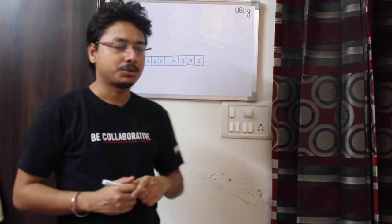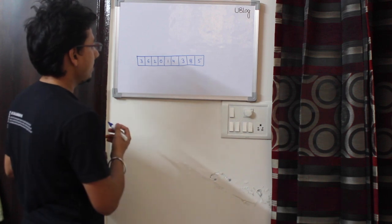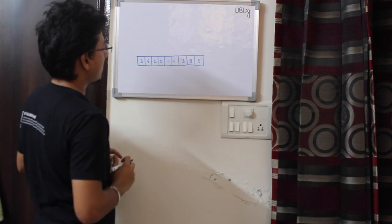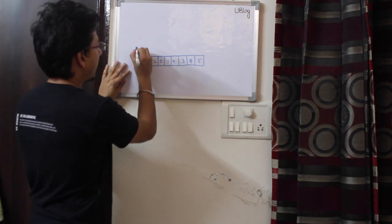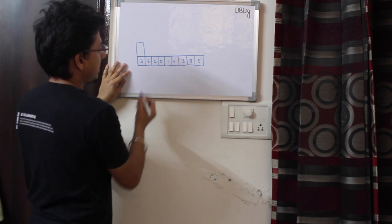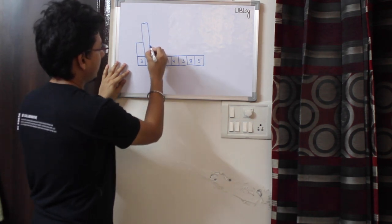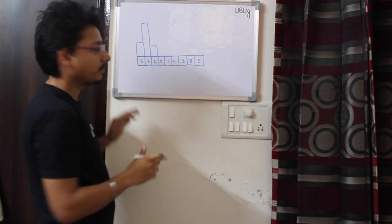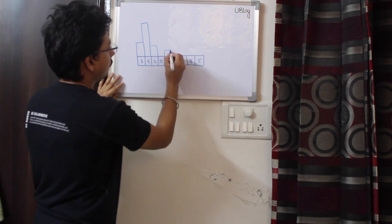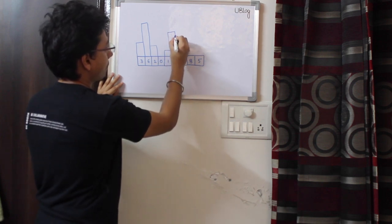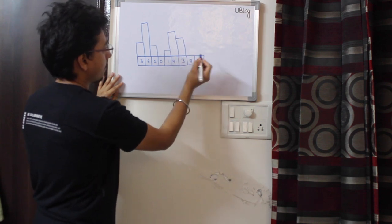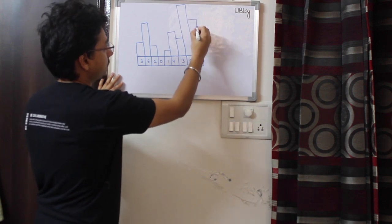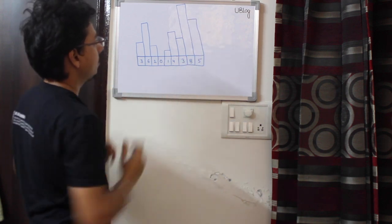Let's see on the board how the question looks. You are given an array where each element represents a bar of width 1 and the number represents the height. So heights are: 3, 6, 2, 0, 1, 4, 3, 8, and 5. This is how the input looks.